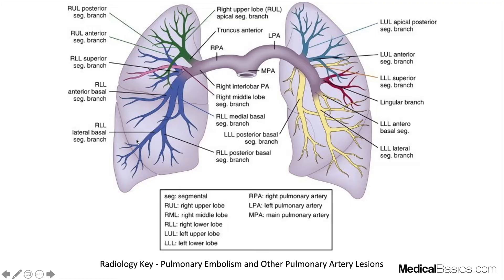On the left you'll have the upper lobe, the lingular — which is kind of the equivalent of the right middle lobe — and then the left lower lobe. When we talk about segmental versus subsegmental, you're going to have a segmental branch, and whenever that branch branches again, that's going to be your subsegmental branch.